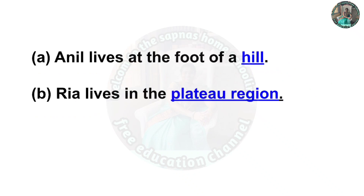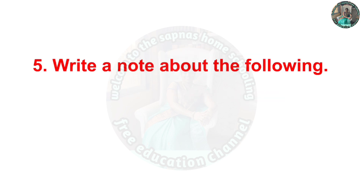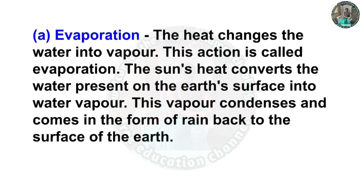Question four: In the following sentences, underline the words that refer to landforms. A: Anil lives at the foot of a hill — 'hill' is the landform. B: Via lives in the plateau region — 'plateau region' is the landform.